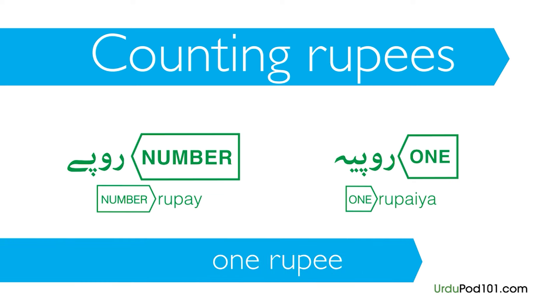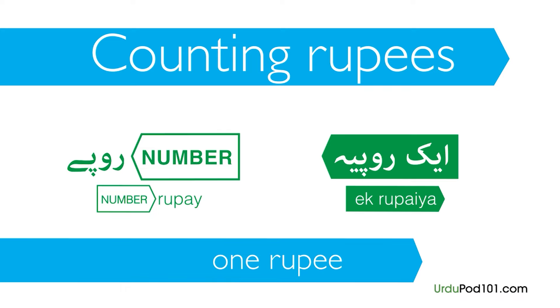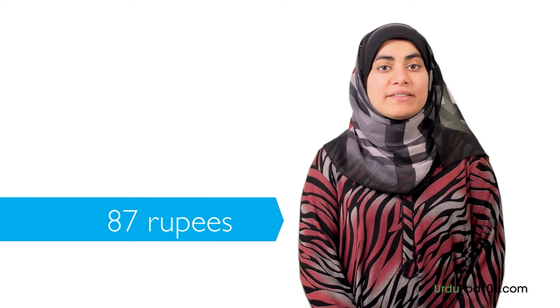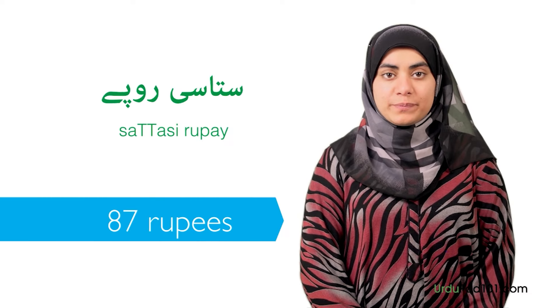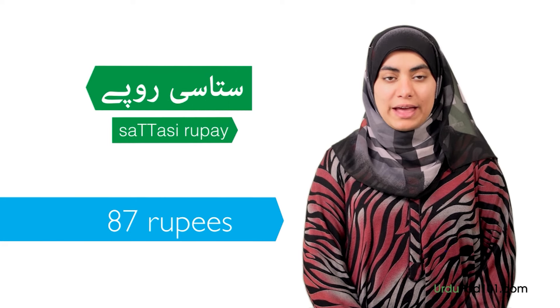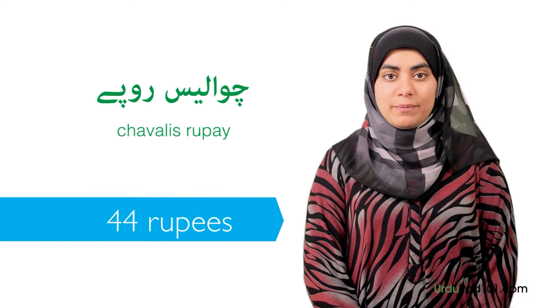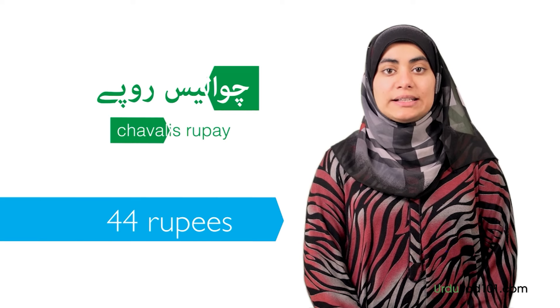The Pakistani rupee uses coins for 1, 2, and 5 rupees, and banknotes for higher denominations — the highest being 5000 rupees. The smallest denomination is 1 rupee, meaning there are no cents used in Pakistani currency. Let's see some more examples: 87 rupees is sataasi rupee. 44 rupees is chavalis rupee.